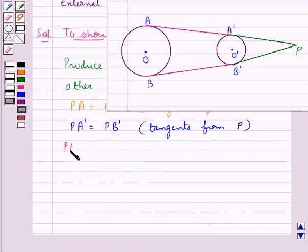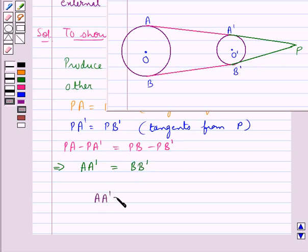Now, PA minus PA dash is equal to PB minus PB dash. From the figure, PA minus PA dash is equal to AA dash and this is equal to PB minus PB dash which is BB dash. Thus we get AA dash is equal to BB dash.